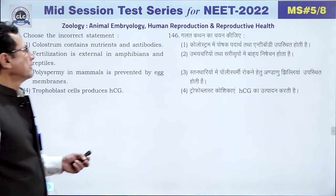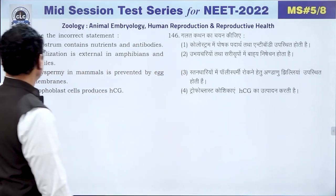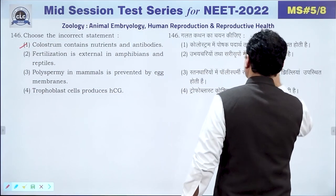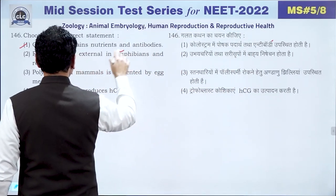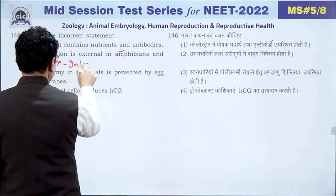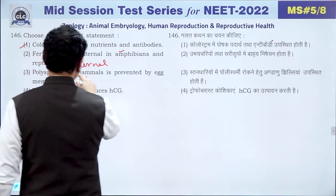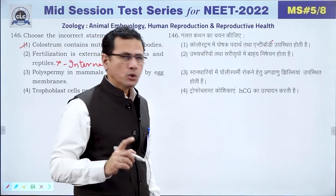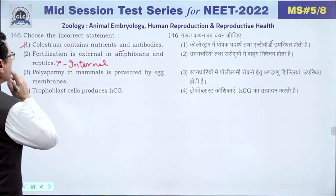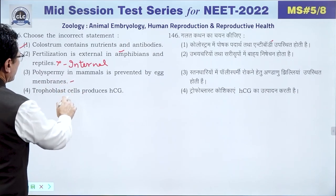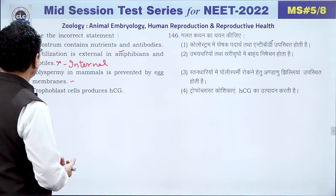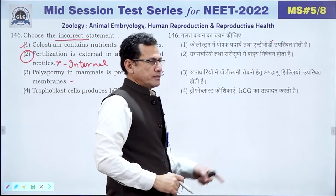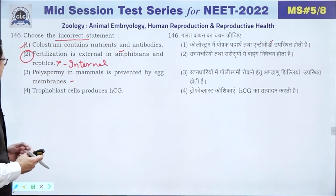Question 146: Colostrum contains nutrients and antibodies — correct. Fertilization is external in amphibians — correct for amphibians. Polyspermy in mammals is prevented by egg membranes. HCG is produced by the outer layer around the egg. The answer is 2.